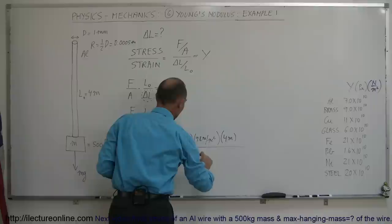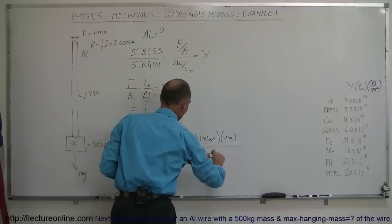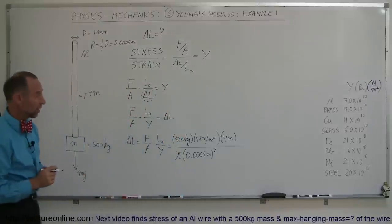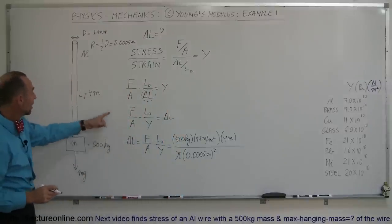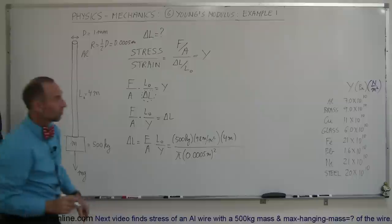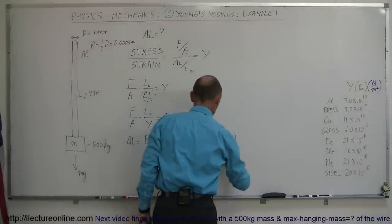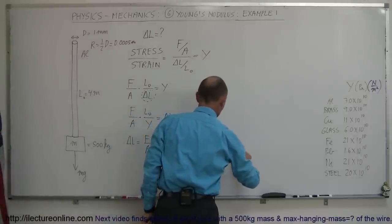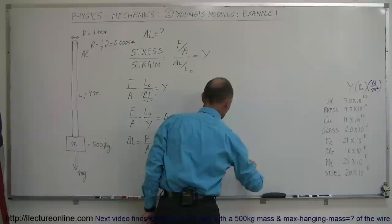So, 0.0005 meters, we have to square that, that's pi R squared for the cross-sectional area. Young's modulus, it being aluminum, it's 7 times 10 to the 10th, 7 times 10 to the 10th newtons per square meter.